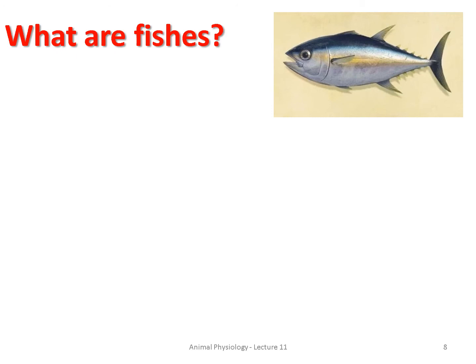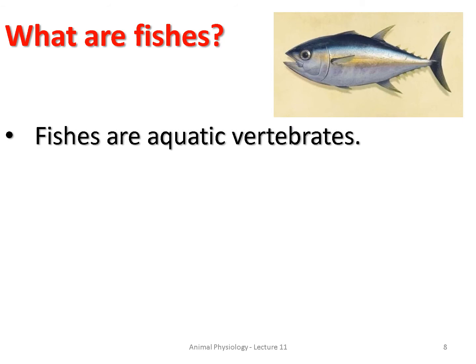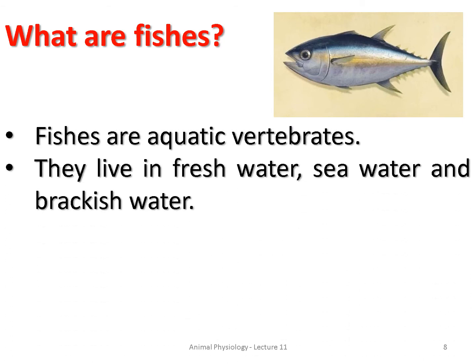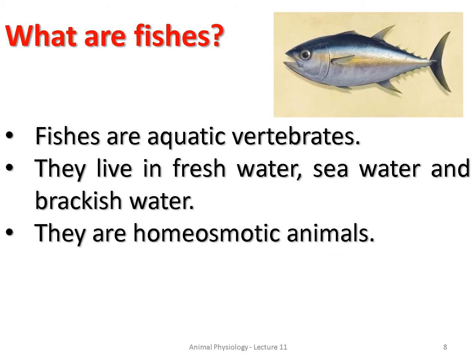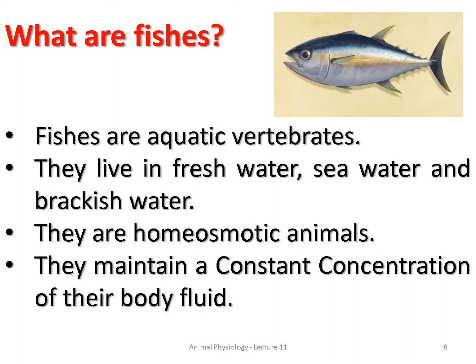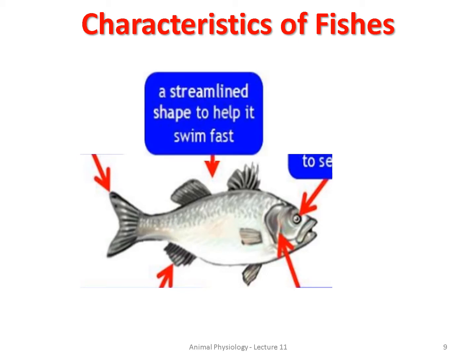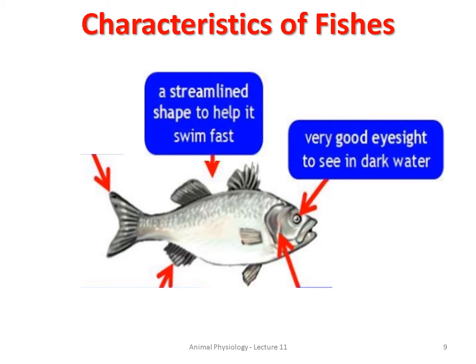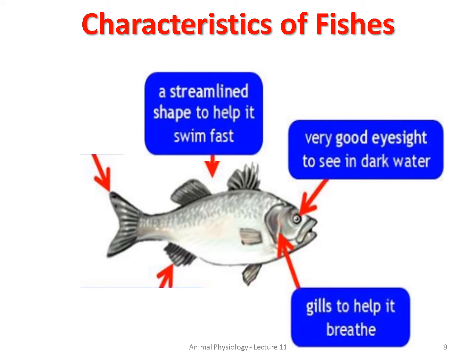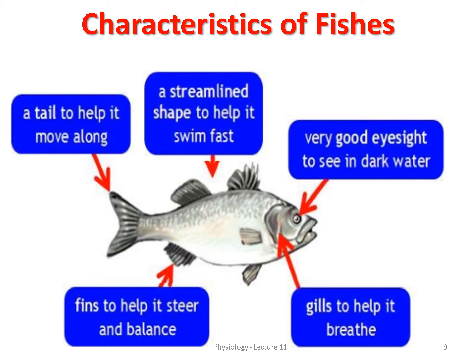Fishes are aquatic vertebrates that live in freshwater, seawater, as well as brackish water. They are homeosmotic animals — they maintain a constant concentration of their body fluid and are osmoregulators. The basic characteristics of fishes: they have a streamlined body, very good eyesight, gills help them to breathe, fins help them to steer and balance, and the tail helps them to move along.